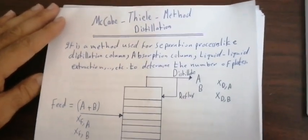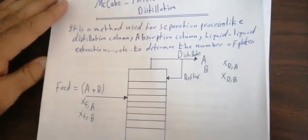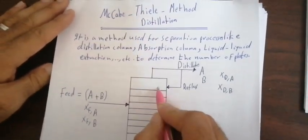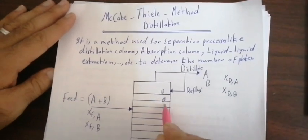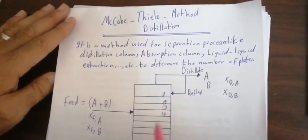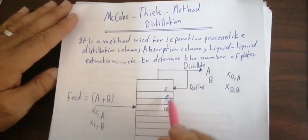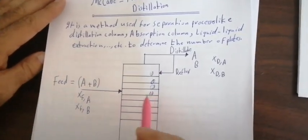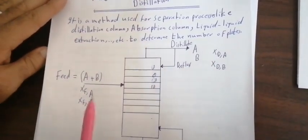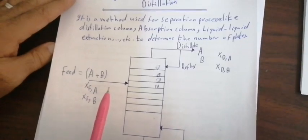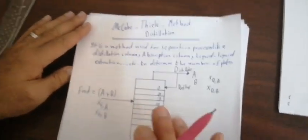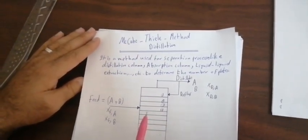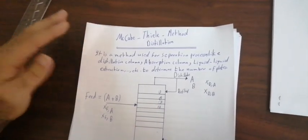The idea of the McCabe-Thiele method is to determine the number of plates. The number of plates are plate one, plate two, plate three, plate four. The numbering of plates starts from the top to the bottom. This is the number of plates inside the distillation column, and they play a very big role in making the separation.